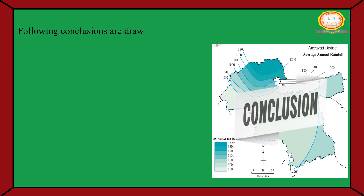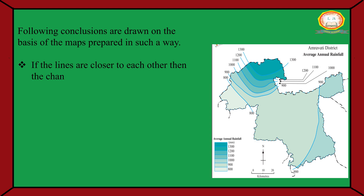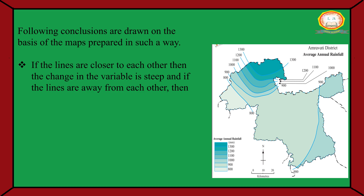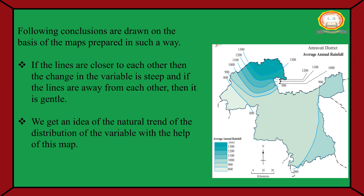Following conclusions are drawn on the basis of the maps prepared in such a way. If the lines are closer to each other, then the change in the variable is steep, and if the lines are away from each other, then it is gentle. We get an idea of the natural trend of the distribution of the variable with the help of this map.